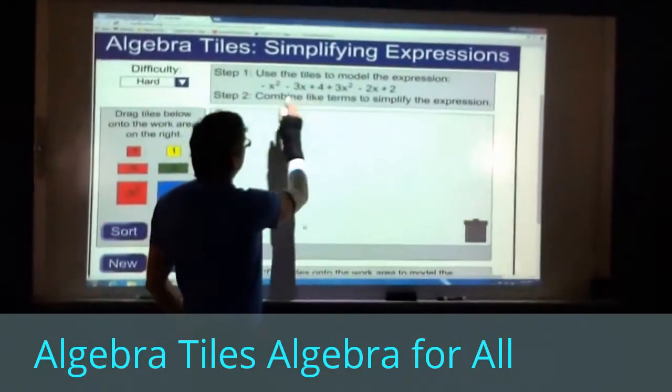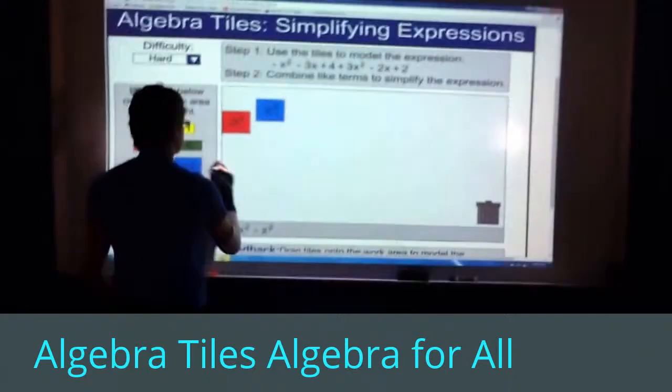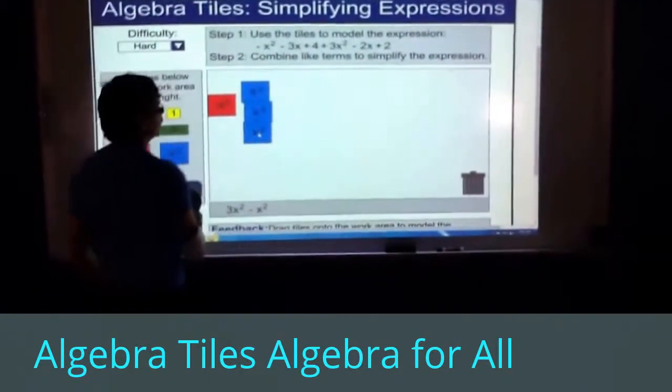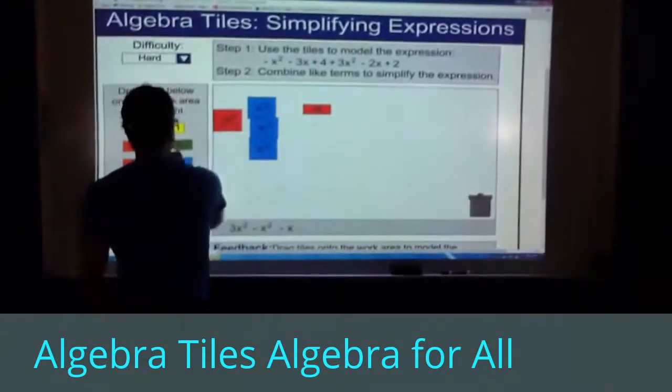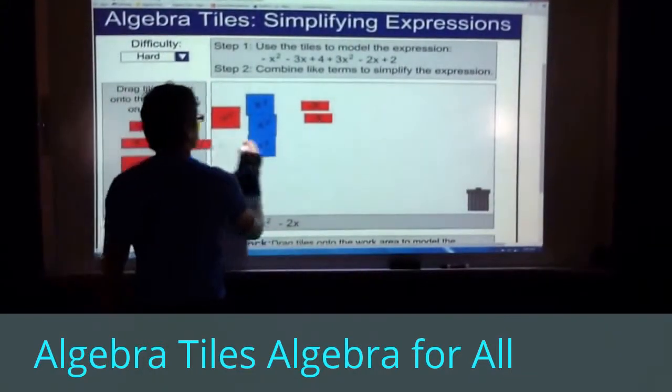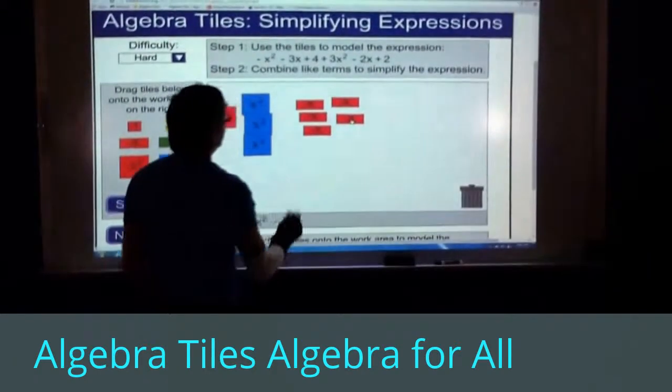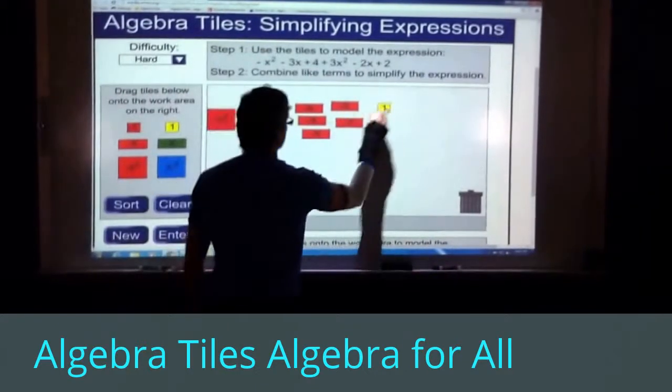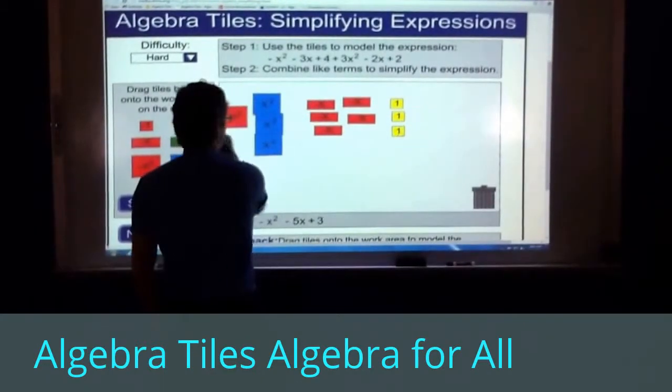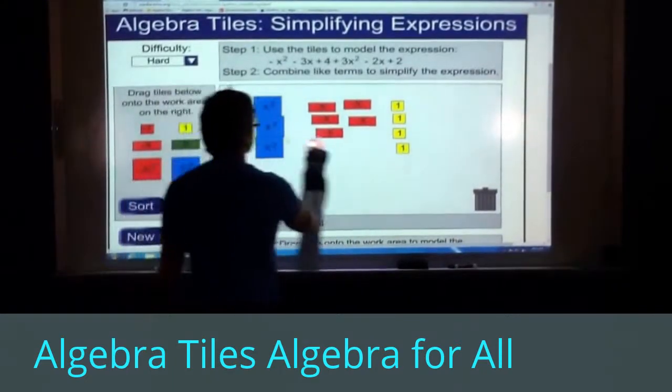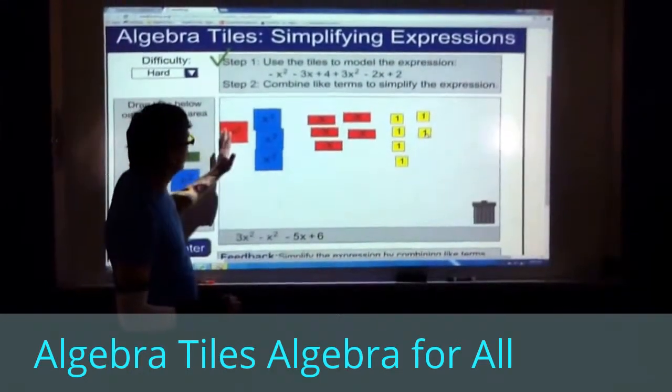I'm going to put my like terms next to each other. The negative 3x and the negative 2x are like terms, so I'm going to put those together. And then I have 4 and 2 are like terms, so I have 4 ones and then 2 more ones. We should now say that we have the problem modeled.